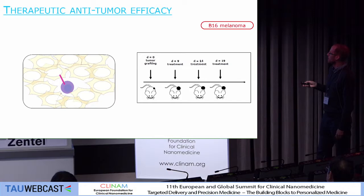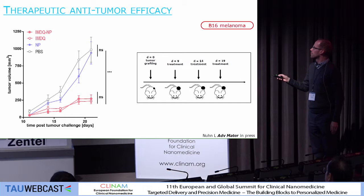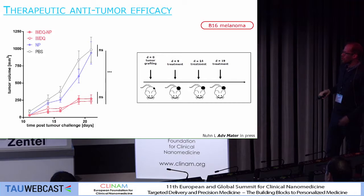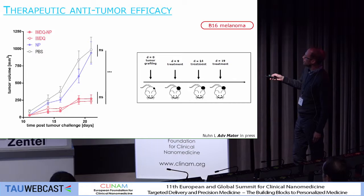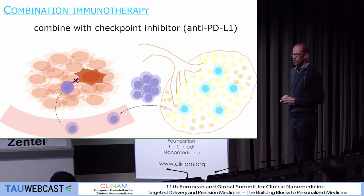For the anti-tumor effect, we grew a B16 melanoma tumor, performed a multiple treatment regime, and monitored tumor growth as a function of time. Both the TLR agonist in soluble form and nanoparticle form induce a strong reduction in tumor growth as a function of time. We are not outperforming the effect of a soluble agonist, but at least we are equally potent and we fully abrogate systemic inflammation.